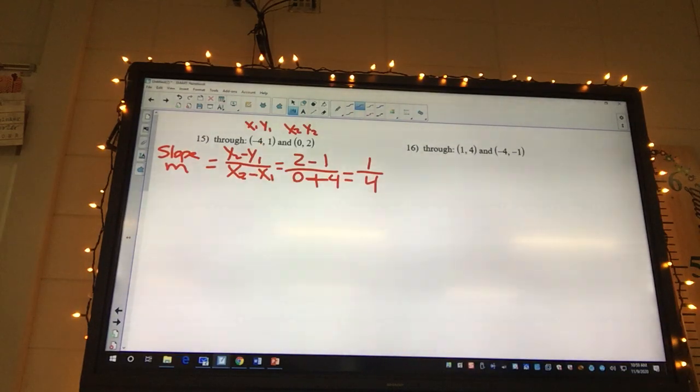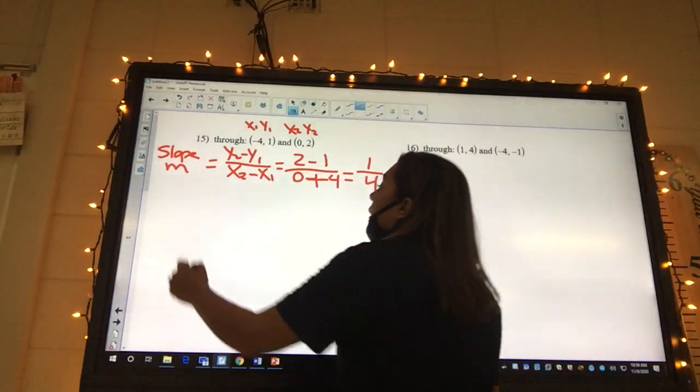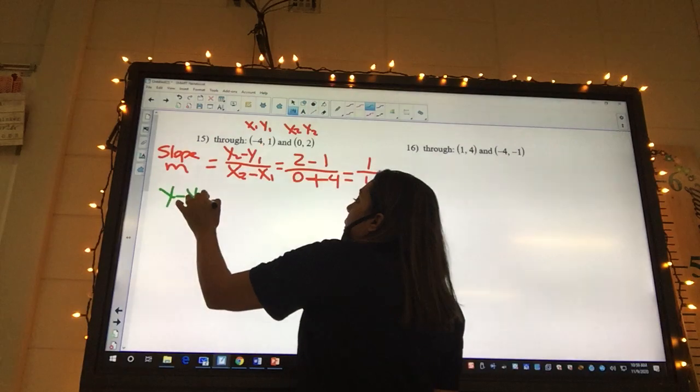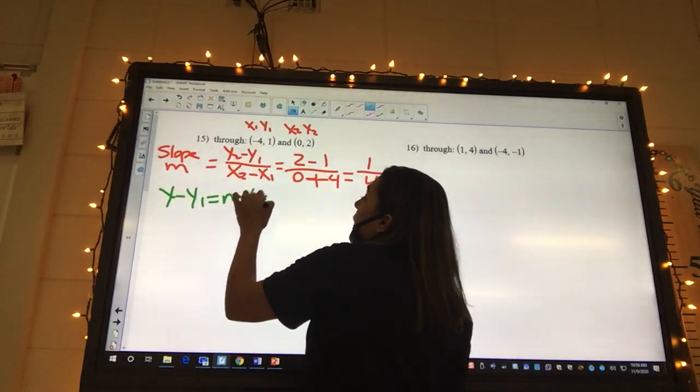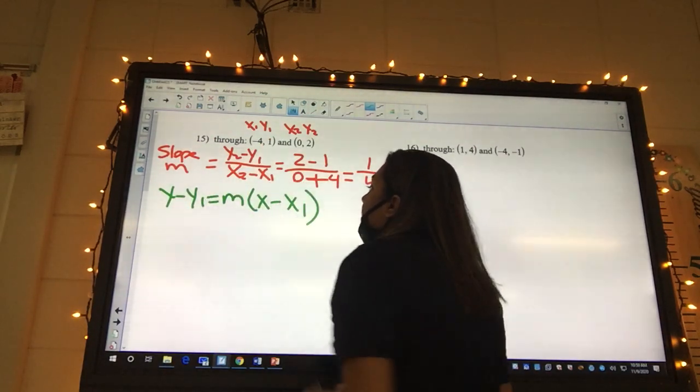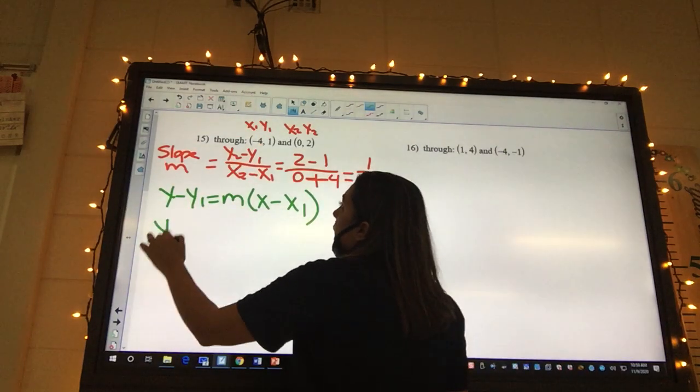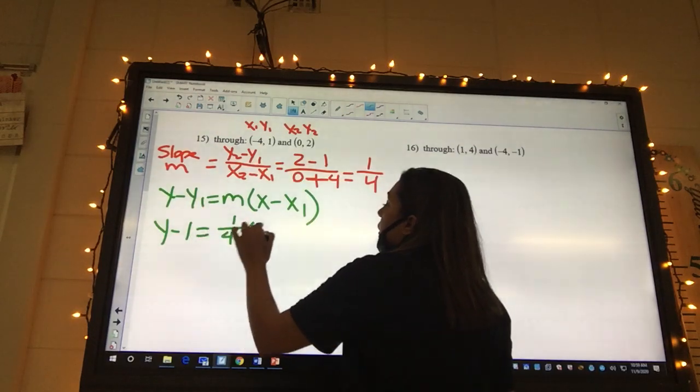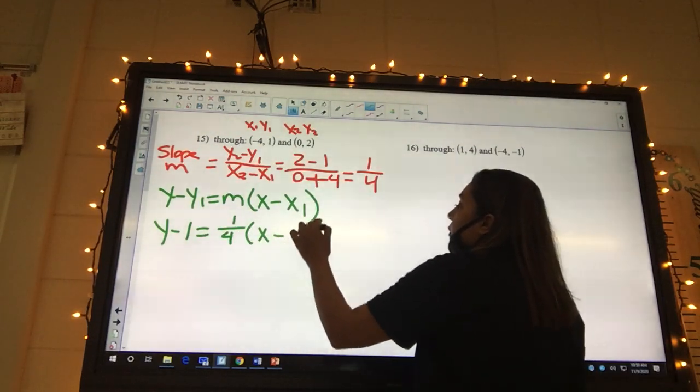And then this one's gonna be 4, so what is 1 fourth? What were we finding? m. It's our m. So now we have points and a slope, so what formula are we gonna use? We got points and a slope, point slope. So we got y minus y1 equals m times x minus x1.